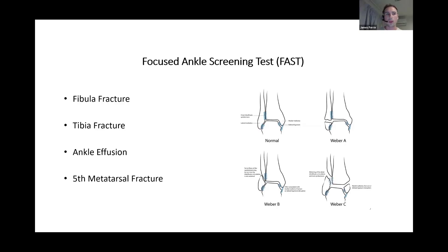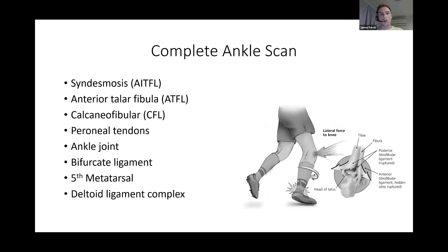This is more of a screening method — not necessarily looking for an ATFL rupture or deltoid ligament crush injury. We're really looking for: is there a fibular fracture, is there a significant ankle joint effusion? If there is, I'll have a high suspicion for a syndesmotic injury or a fracture inside the joint. We can also check the fifth metatarsal. When I do a complete ankle scan, I usually start by looking at the syndesmosis.